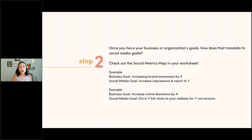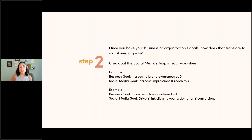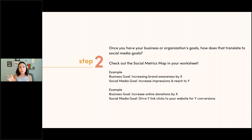Step number two: once you have your business or organization goals, we need to translate them into social media goals. I have a nifty map — a cheat sheet — to show you. For example, your business goal could be to increase brand awareness by 50%, meaning website traffic by 50%. Your social media goal would then be to increase your impressions and reach to a certain percentage. Brand awareness equals impressions and reach as your metric.